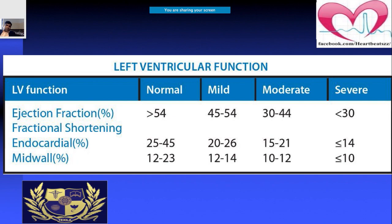The most important parameter for systolic function is LV ejection fraction. Normal EF is greater than 54%. Mildly reduced LV function corresponds to EF 45–54%, moderate dysfunction to EF 30–44%, and severe dysfunction to EF less than 30%.